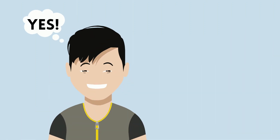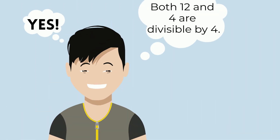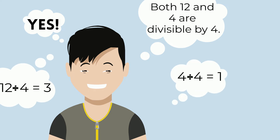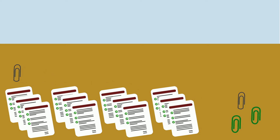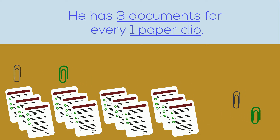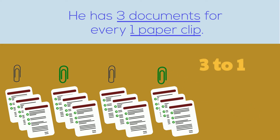Just like fractions, you can simplify ratios by dividing both numbers by the same number — in this case, 4. He divides the documents into 4 equal groups and does the same for the paperclips. He has 3 documents for every one paperclip: a ratio of 3 to 1.